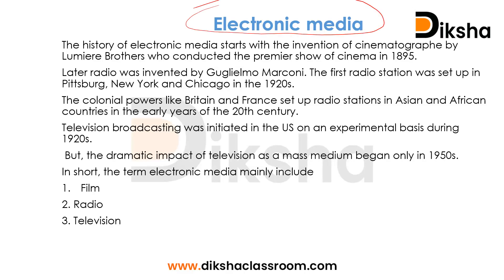After print media, we move to electronic media. The history of electronic media started with the invention of the cinematograph by the Lumière brothers in 1895 — the term 'cinema' itself originated from 'cinematograph'. After this, the invention of radio by Marconi was an advancement in electronic media. Television broadcasting started for the first time in the US in the 1920s and became widespread from the 1950s onwards. Electronic media can be further classified into film, radio, and television.